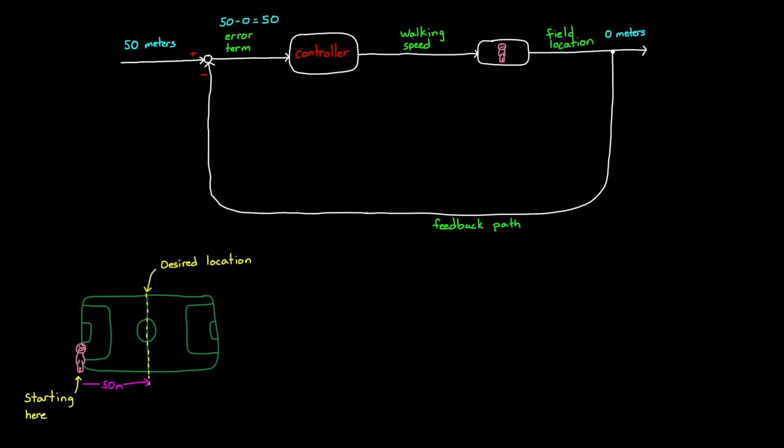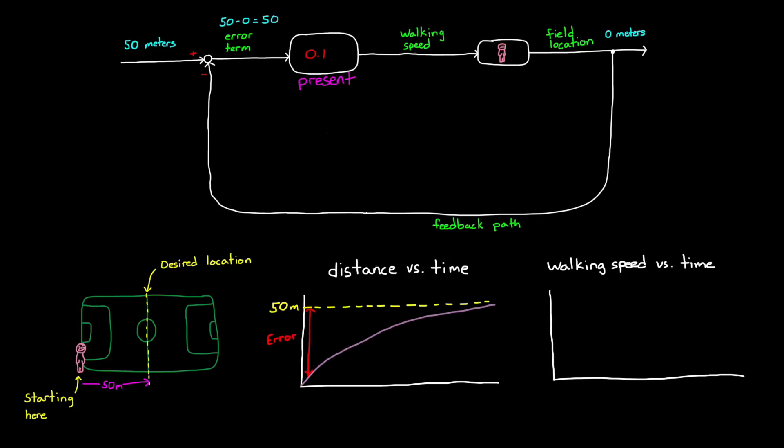Your brain, being the controller, tells your legs how fast to walk. And one way your brain can do this is to use the error at the present moment to decide your walking speed. Here, I've set our controller to the value of 0.1. This means that if we take the error in our system and multiply it by 0.1, we'll get our walking speed. With a proportional controller like this, we start reducing the error quickly since we're far away, and then gradually slow down as we get closer and closer to our goal. In this way, we would eventually and asymptotically reach the half field line, at which time the error would be zero, and our proportional controller would multiply that by 0.1, which would generate a walking speed of zero, stopping us right where we want to be.